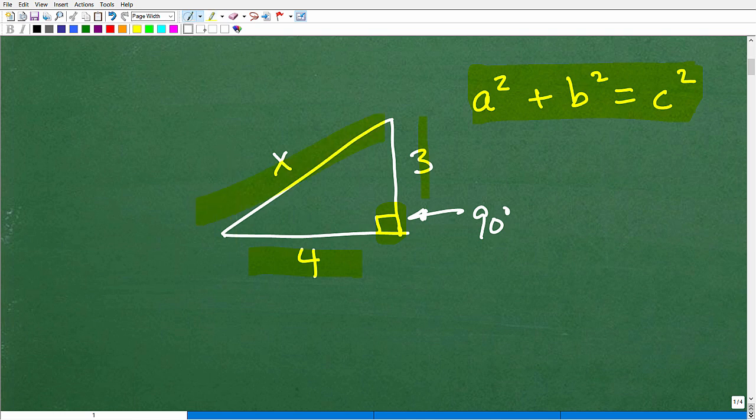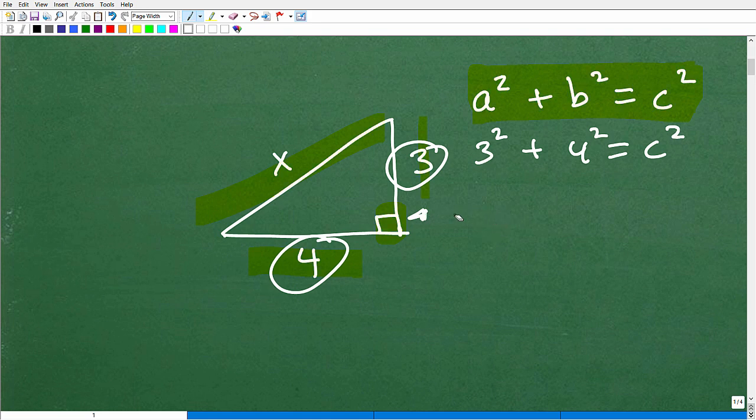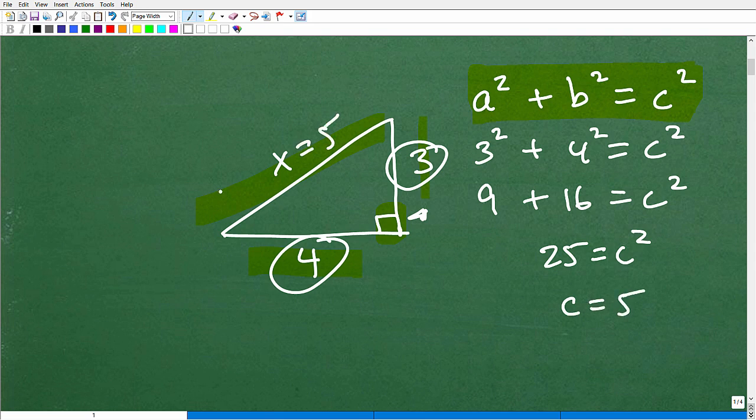I could just plug everything in. This would be 3 squared, this would be our a, this would be our b. So this is 9 plus 16 equals c squared, or 25 equals c squared. Take the square root of both sides. C equals 5. So the length of this is equal to 5. But here's the deal.